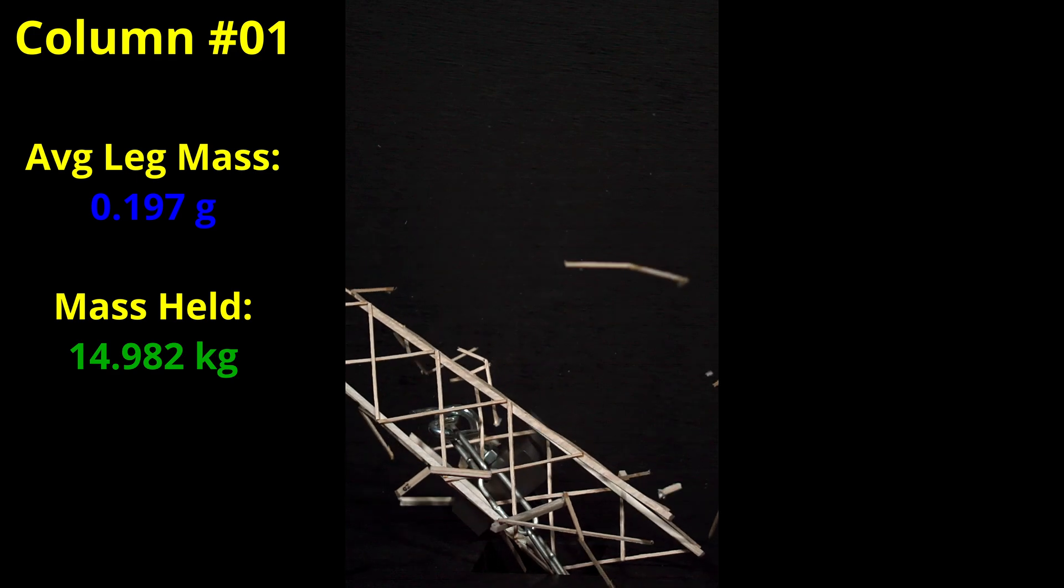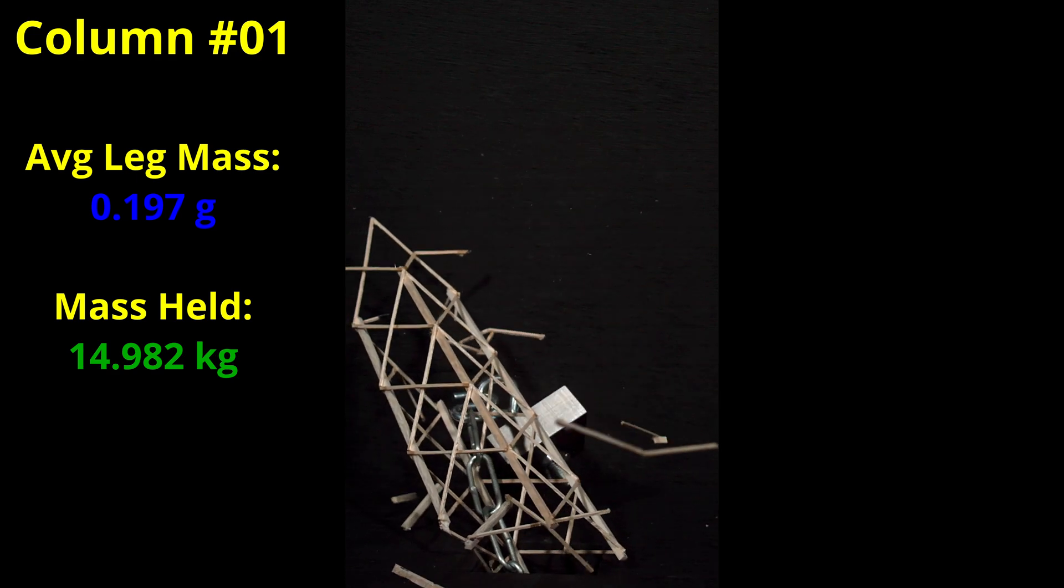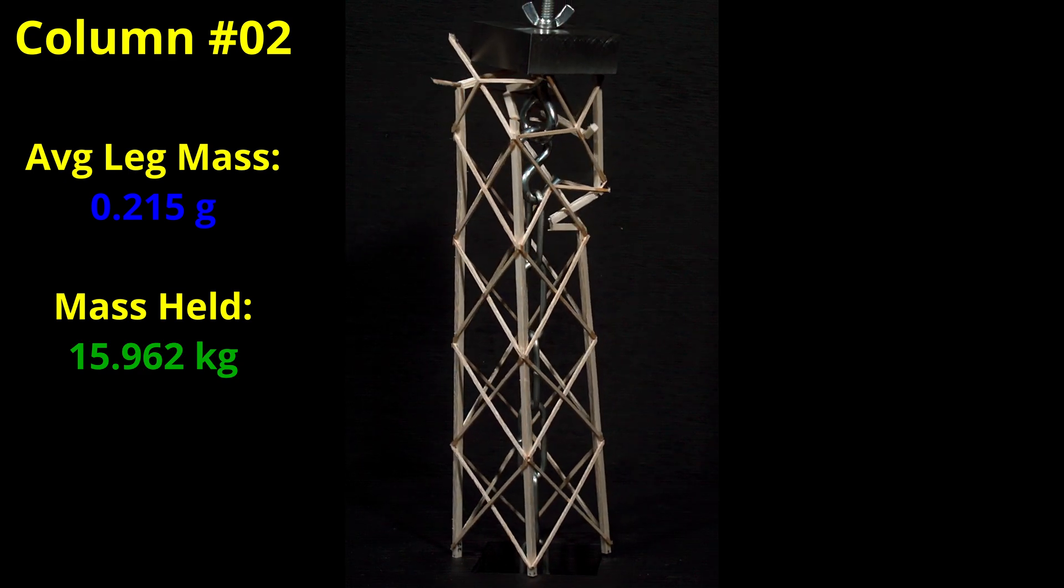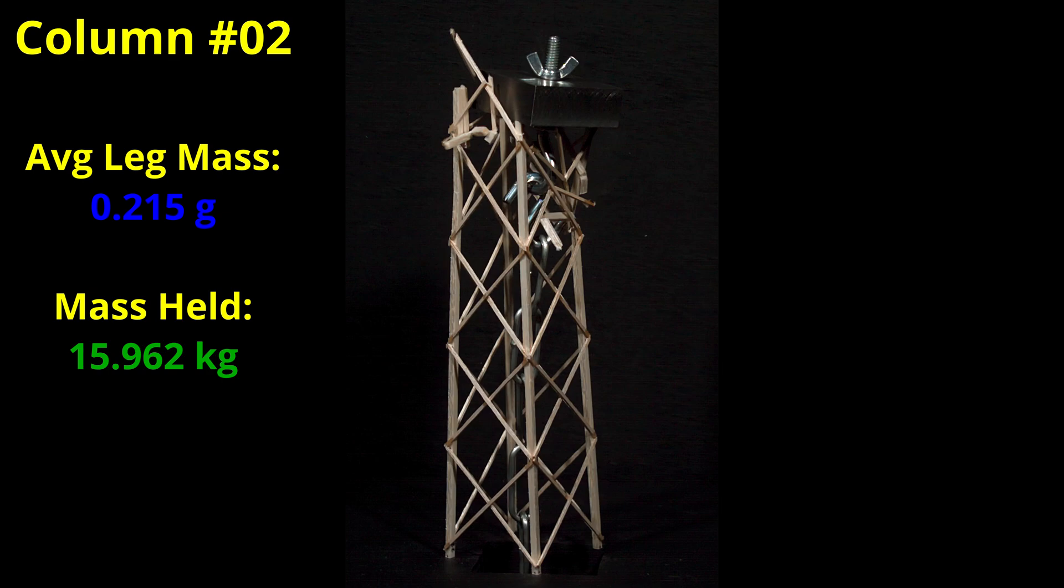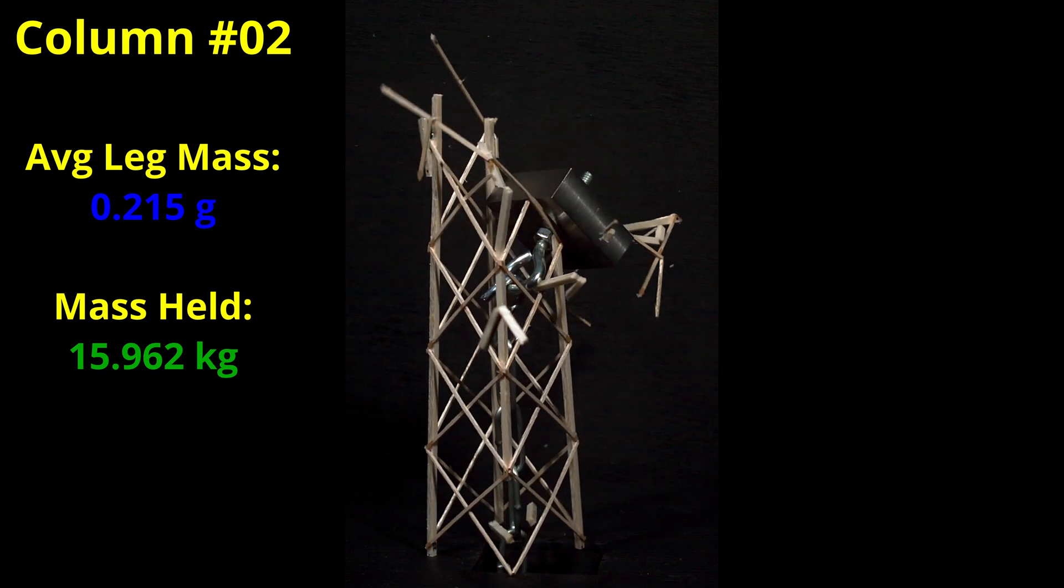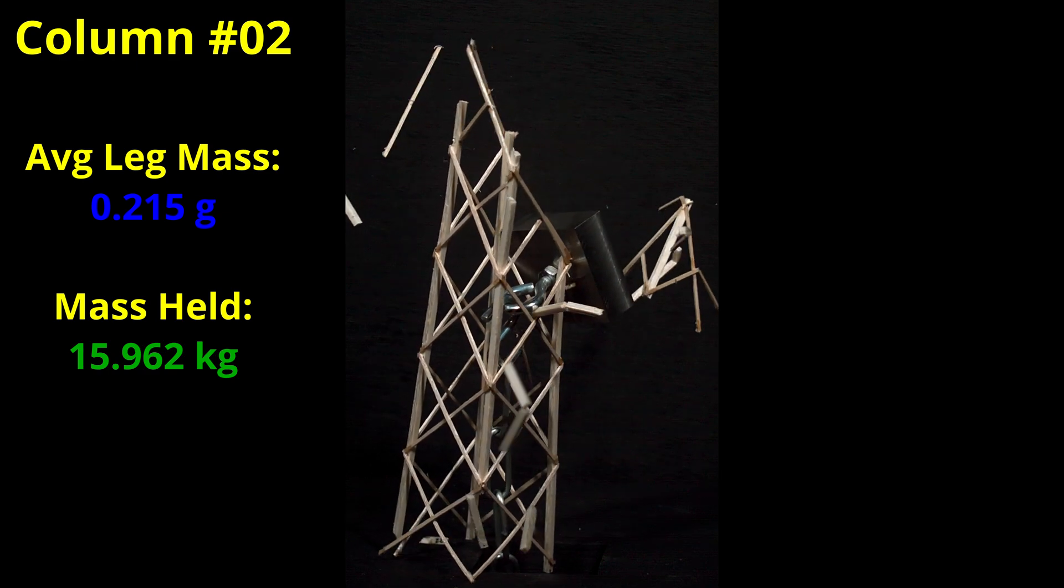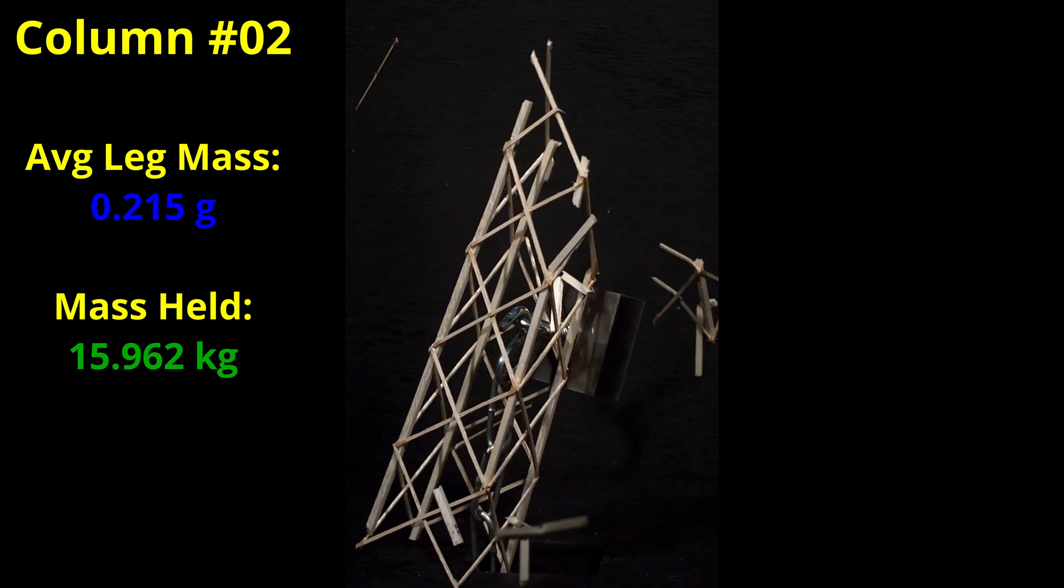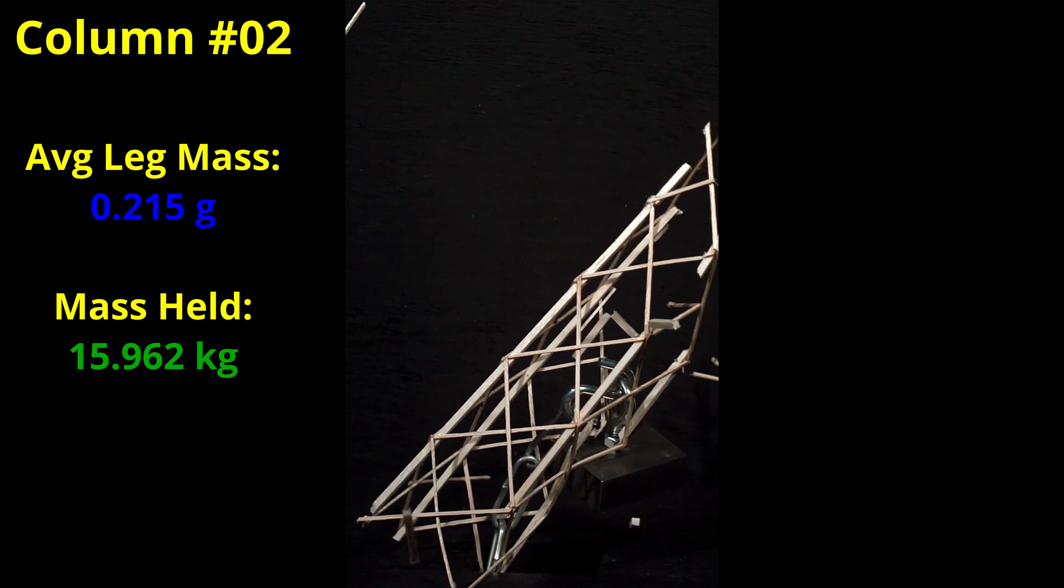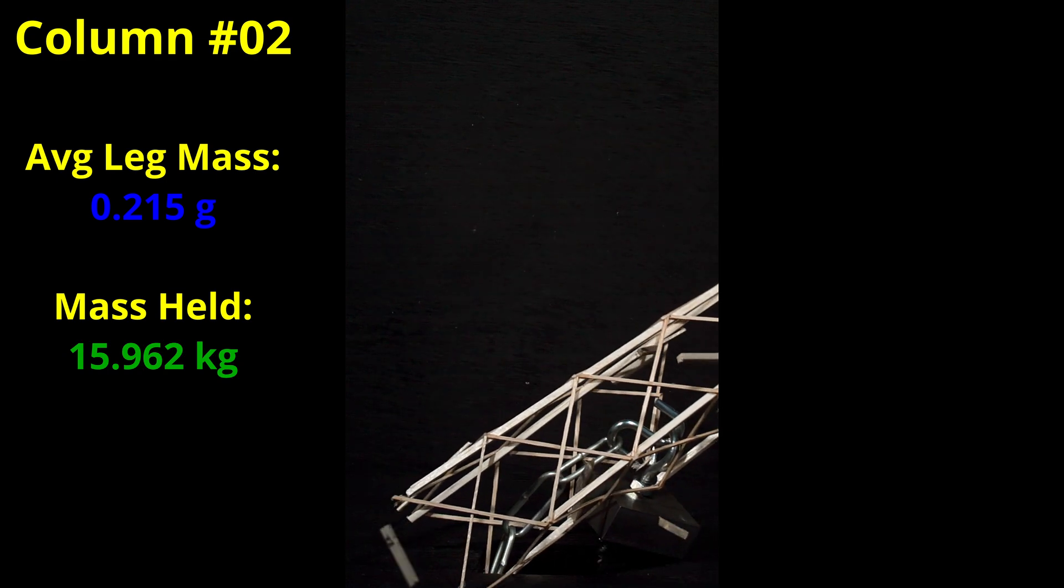I was immediately questioning the range of legs I chose for this series of tests. Let's see how the next one does. This column used slightly heavier legs with a total mass of 0.858 grams or an average of 0.215 grams. Here we also have a nice leg failure and it held 15.962 kilograms. Now I was wondering if this whole experiment was over and I had my answer. These legs would have been a nice choice for a bonus tower if the cross members could be scaled down to a balanced weight.